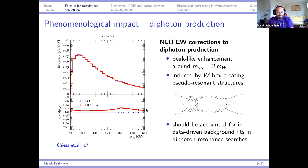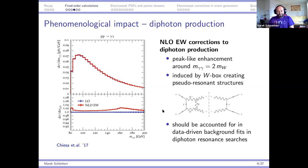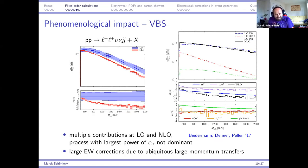The electroweak sector can also produce edges or thresholds for the same reasons: massive particles added in loops at higher orders can produce threshold structures when they cross a threshold and become approximately on-shell intermediate states.